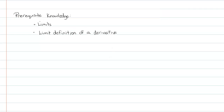The prerequisite knowledge we're going to need: we'll have to know limits, of course, and the limit definition of a derivative. All these shortcuts you learn with derivatives are brought to you by the limit definition of a derivative — you have to know that to be able to do any of these shortcuts. There's also going to be a little bit of binomial expansion that we use within the very first part of the proof. The second part won't need it, but will need logarithmic differentiation.